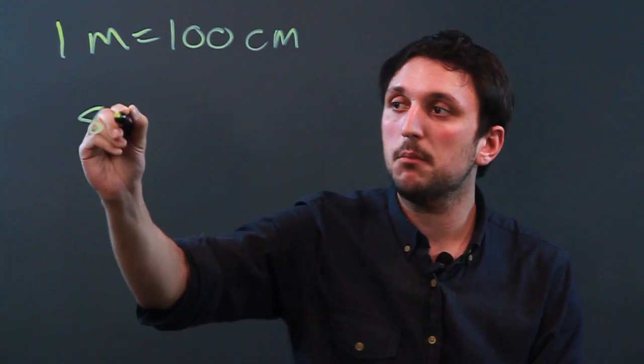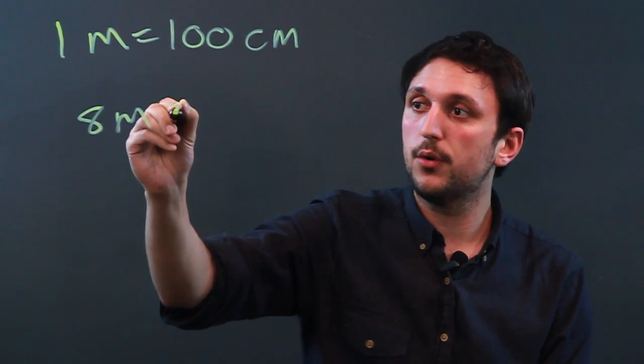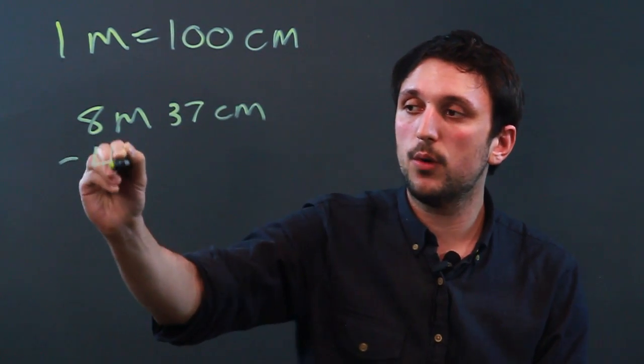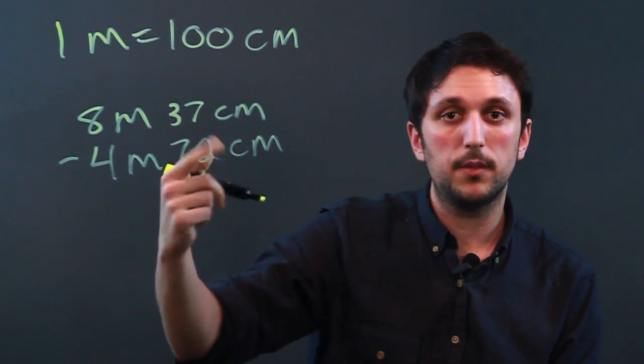So for example let's say we had eight meters and 37 centimeters and we want to subtract four meters and 72 centimeters from that.